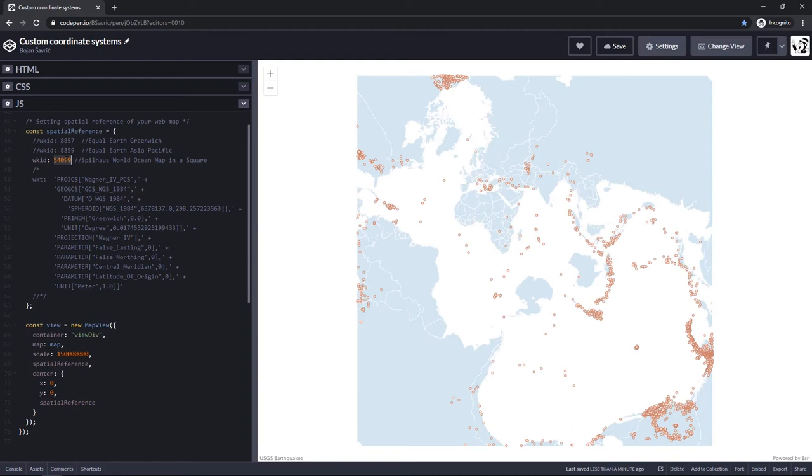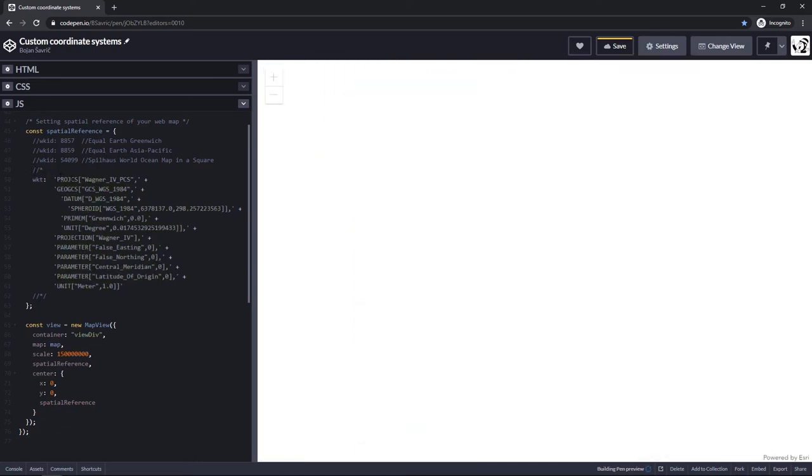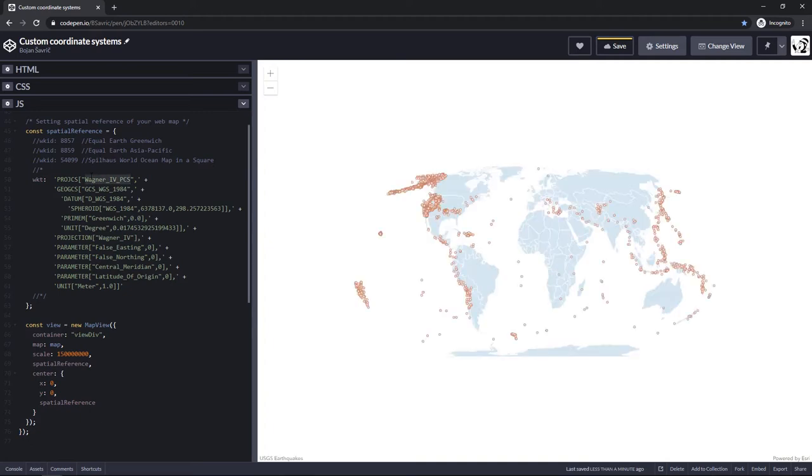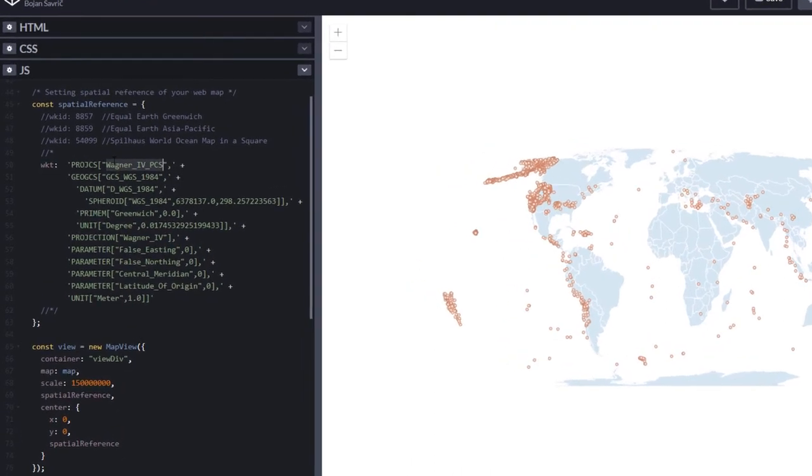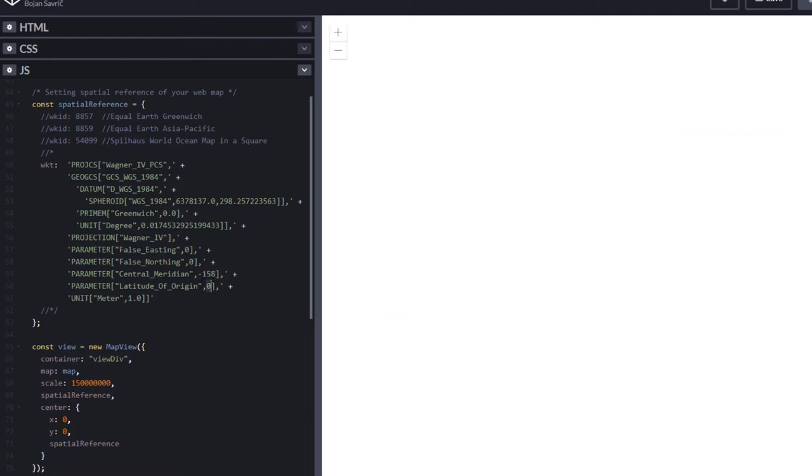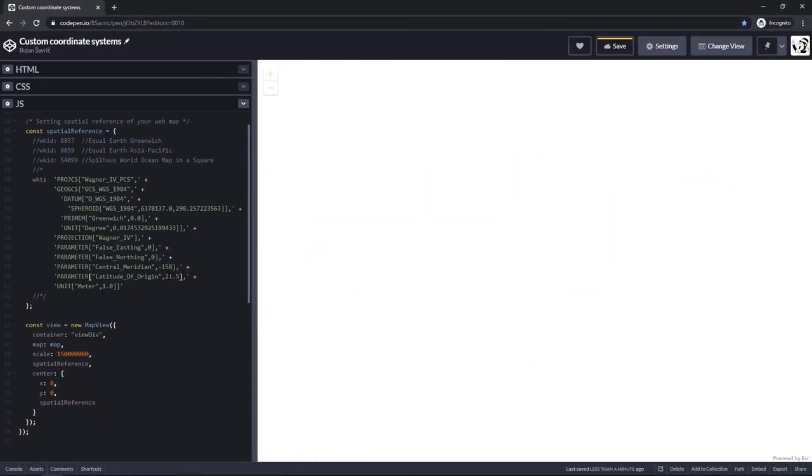You can also use well-known text strings to create a coordinate system for your map. Here I have an example where I use Wagner 4 projected coordinate system. A nice thing about providing a coordinate system with WKT strings is that you are no longer limited to predefined coordinate systems. You can basically create and use your own custom projection coordinate system by just changing projection parameters in the string. In my case, since I'm using Wagner 4 projection, I can adjust False Easting, False Northing, Central Meridian, and Latitude of Origin. So, let me go ahead and change the Central Meridian to be minus 158 and Latitude of Origin to be 21.5. This way, I will get a map in Wagner 4 projection, but now it is going to be centered on Hawaii.